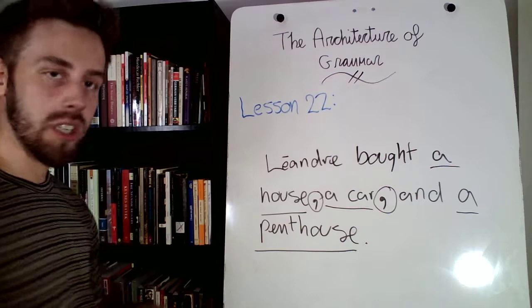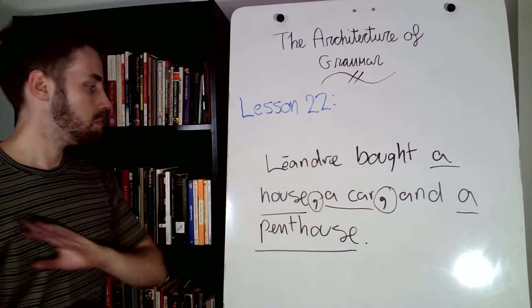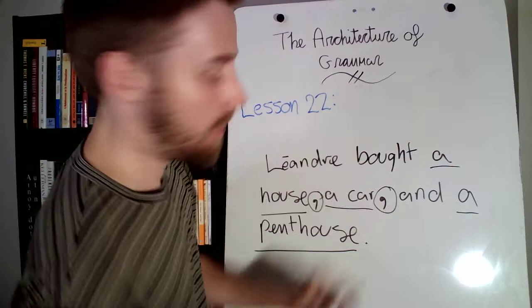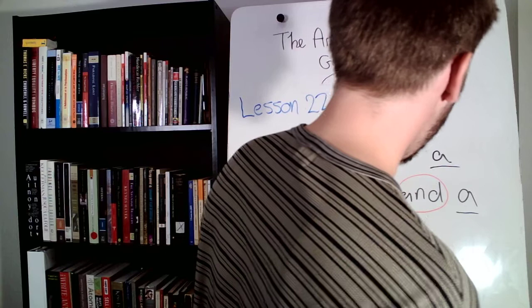For starters, you can have a list of two things. So, León bought a house and a car. If that's the case, you don't need a comma. No comma. Now, if you have three or more elements, that's where you need a comma.